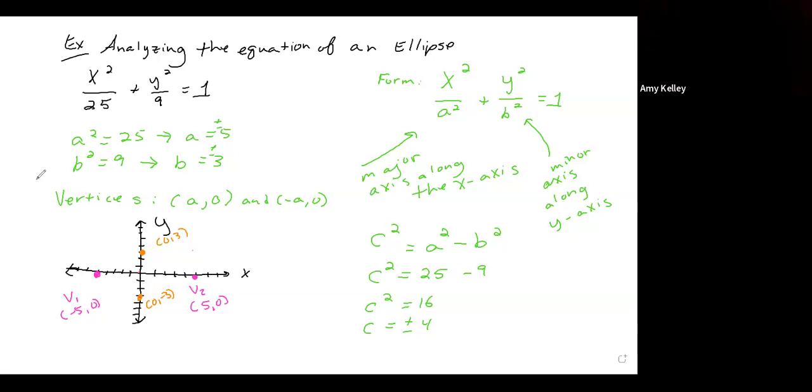All right, so now I have my foci at 4, 0 and negative 4, 0. I'll call this F1, and over here, F2.